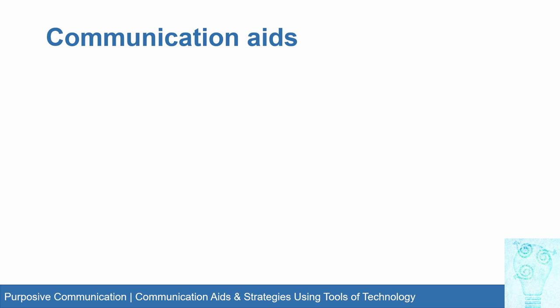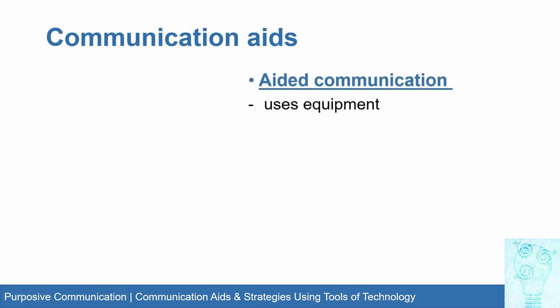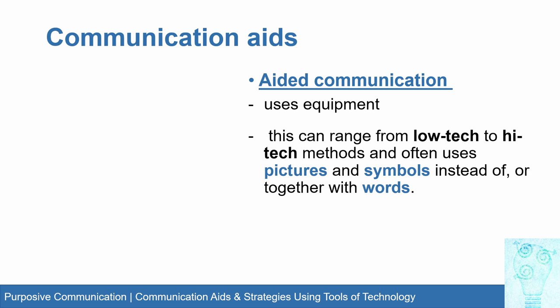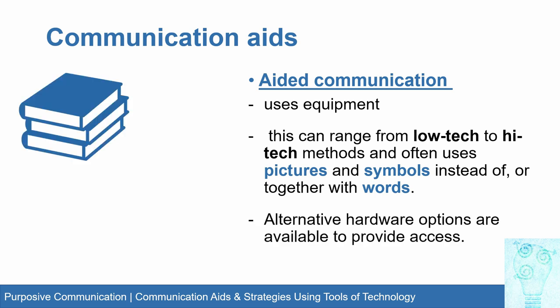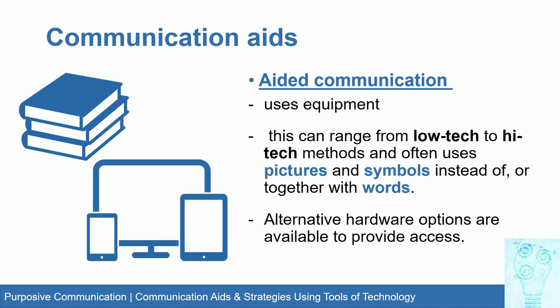Aided communication is different from unaided because it uses equipment. The equipment can range from low-tech to high-tech methods. Low-tech could be books that you carry around with a few pages, pictures, or symbols. High-tech is the use of devices — cell phones, tablets, laptops. In aided communication, alternative hardware options are also available, like books and devices.